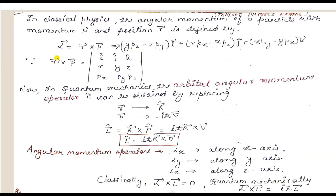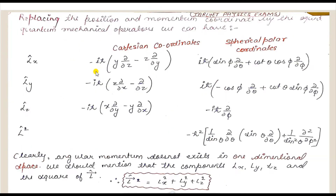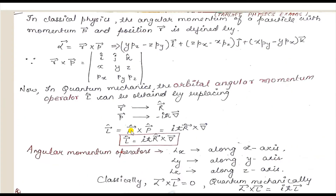So r × p gives us: (y·pz − z·py) î + (z·px − x·pz) ĵ + (x·py − y·px) k̂. Removing this cross product, we get these component values.